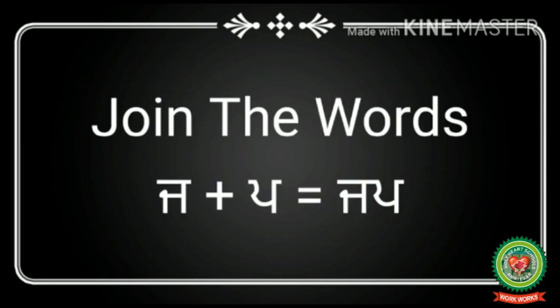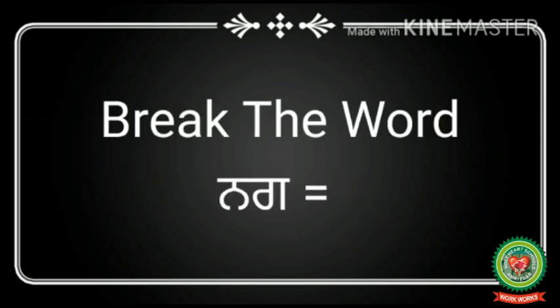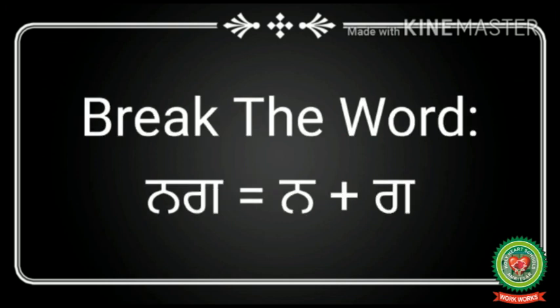So jaja plus papa equals jaja-papa — 'jap.' That is how you do this exercise. The next exercise is 'break the word.' Here I have taken one example: nana-gagga. This is a two-letter word. What we have to do is break this word and separate the letters using a plus sign, so nana-gagga equals nana plus gagga.